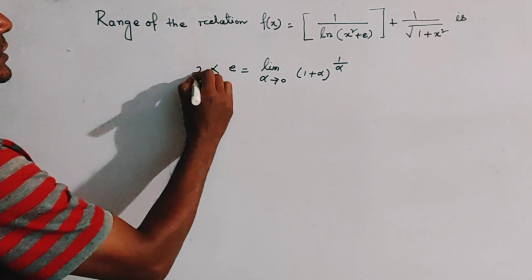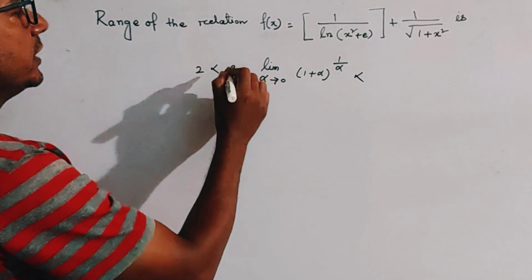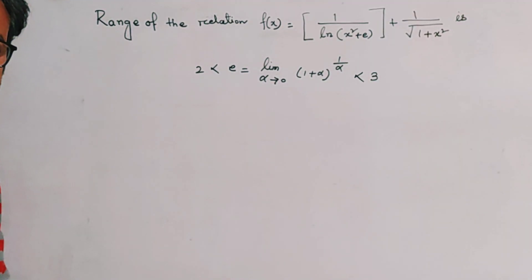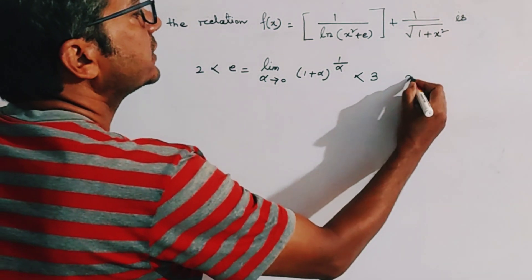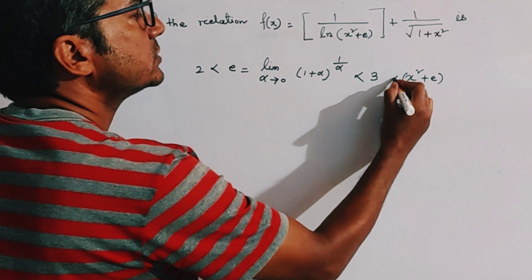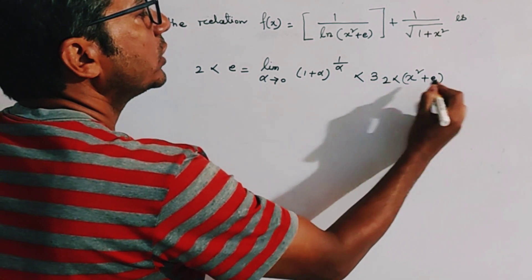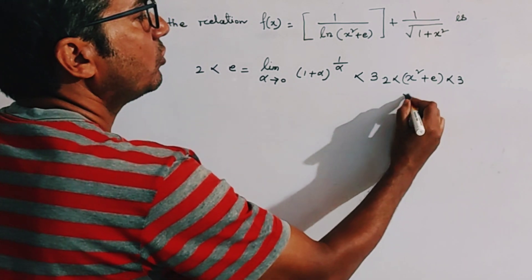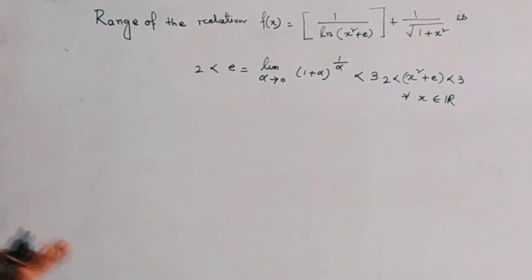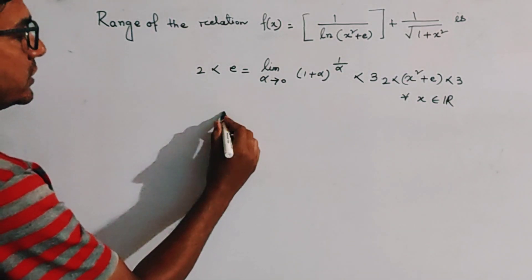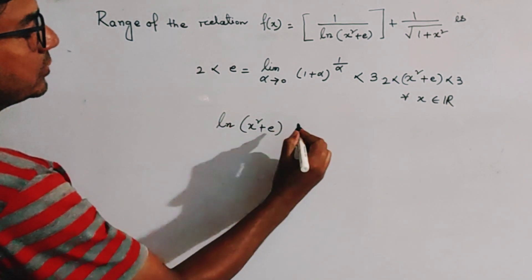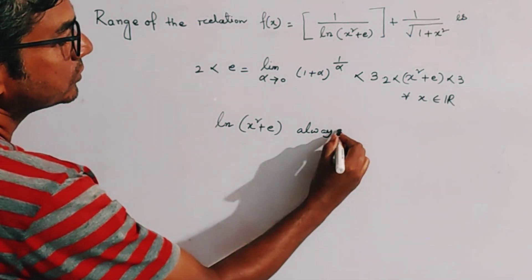e is an irrational number which is greater than 2 and less than 3. So x²+e is always greater than 2 and less than 3 for all values of x belonging to real numbers. Therefore, the natural log of x²+e always exists.